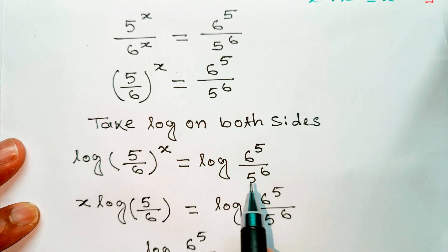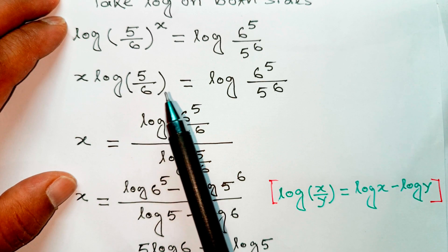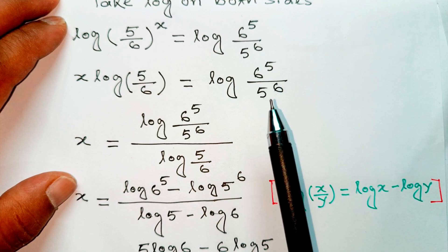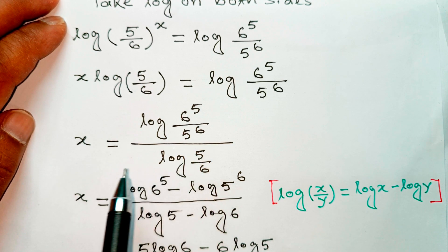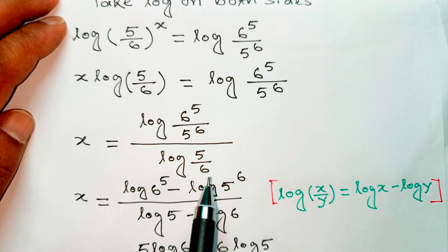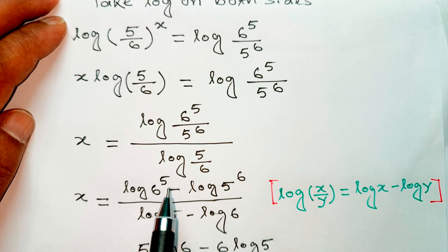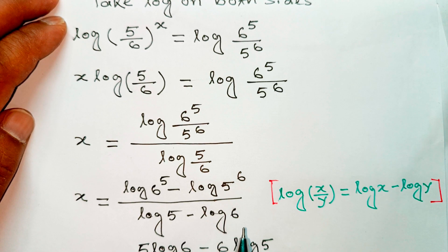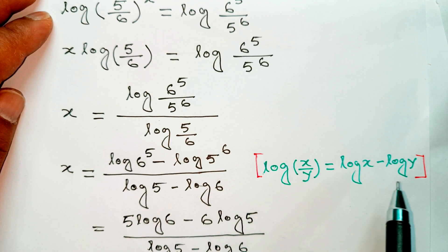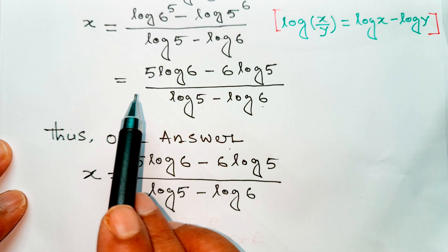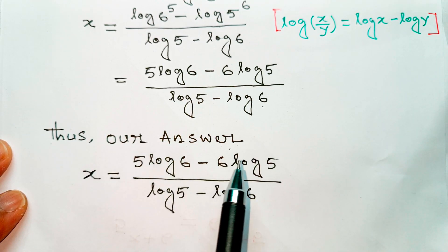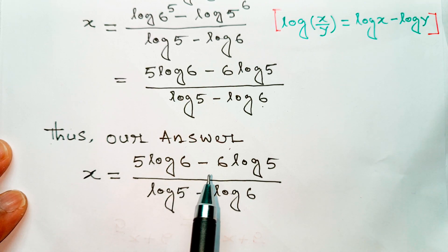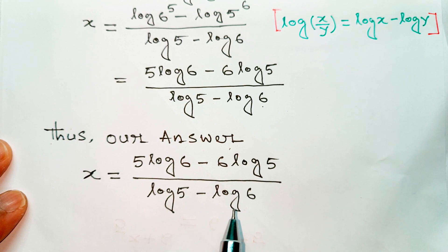Applying the log power rule: x times log(5/6) equal log(6 to the power 5 divided by 5 to the power 6). Solving for x: x equal log(6 to the power 5 divided by 5 to the power 6) divided by log(5/6). Using log(x/y) equal log x minus log y, this becomes 5 log 6 minus 6 log 5, divided by log 5 minus log 6. Thus our answer: x equal (5 log 6 minus 6 log 5) divided by (log 5 minus log 6).